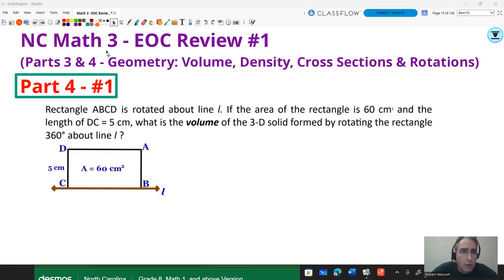Part four, question number one. We're going to take a rectangle ABCD and rotate it about line L. If the area of the rectangle is 60 centimeters squared and the length of DC is 5 centimeters, what's the volume of the 3D solid formed by rotating the rectangle 360 degrees about line L? Here's line L down here. We're going to rotate that 360 degrees and form ourselves a cylinder because both of those will make a circle. And so that radius is going to be that 5 centimeters that you see there.